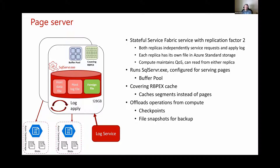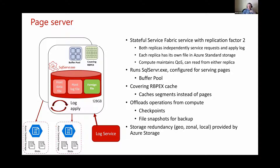There is a covering RBPX cache — RBPX stands for Resilient Buffer Pool Extensions. It's a covering cache for the blob in Azure Storage. Each blob is typically 128 gigabytes, and the RBPX cache is also 128 gigabytes, meaning all pages are cached in local SSD on the page server. Even though reading data from a page server is a remote read, it's a fast remote read because data is on local SSD or in buffer pool. The page server also offloads operations from compute — things like checkpoint and writing changed pages back to data files in blob storage — freeing more resources for your workloads. Backups are done via file snapshots in blob storage, also initiated by the page server. Data redundancy and durability is provided by Azure Storage with a very high durability SLA of 11 nines per year.